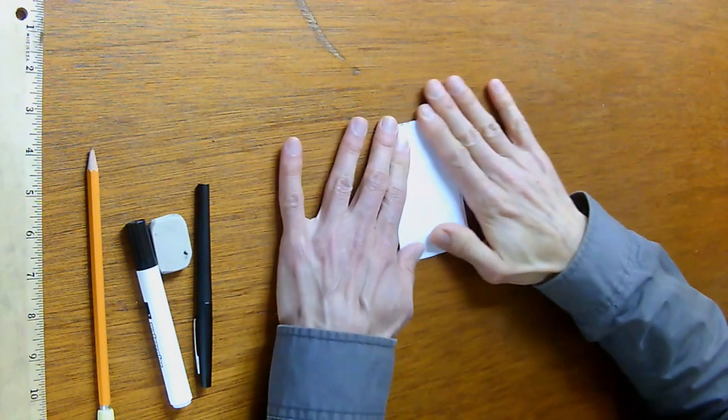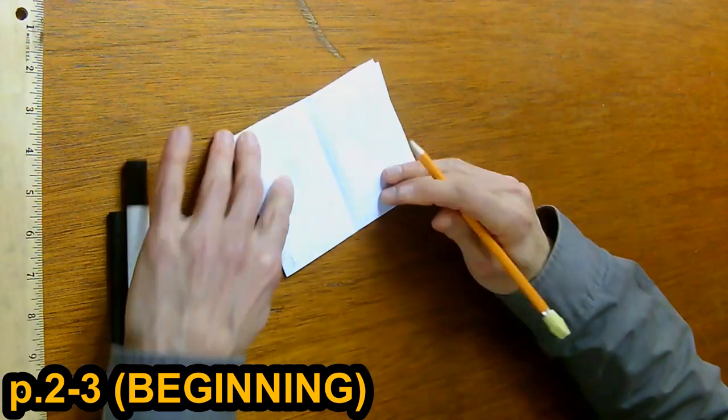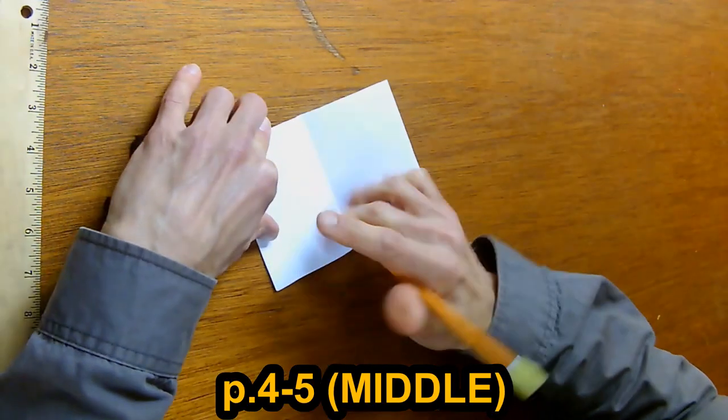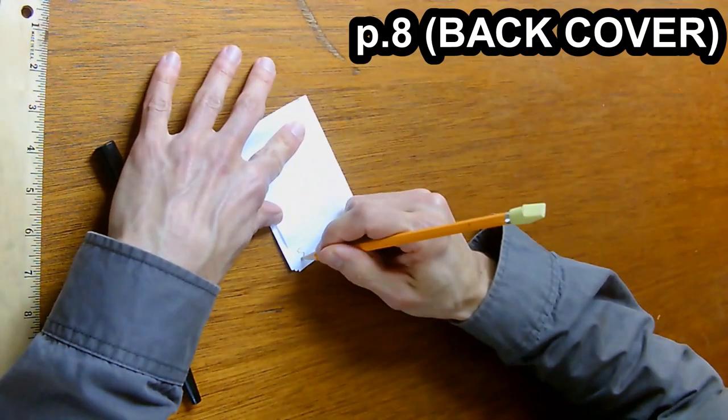Now that it's in book form, we can take a pencil to number the pages. Number one is our front cover. Two and three will be the beginning of a story. Four and five will be the middle of a story. Pages six and seven are the end of a story. And page eight is the back cover.